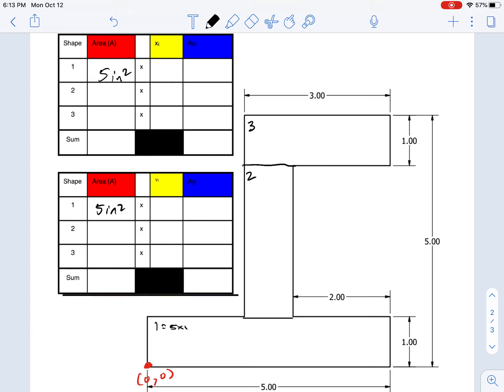The area for shape two, if you look, this is 5 units tall minus 1 minus 1, so that's 3. And it's 1 unit wide, the 3 minus the 2 there, so 3 square inches.